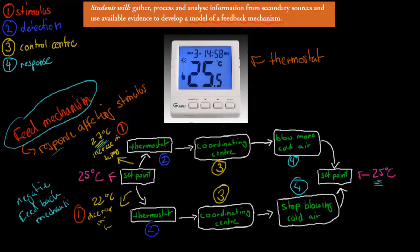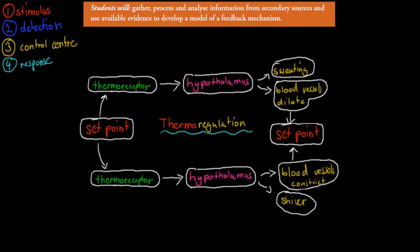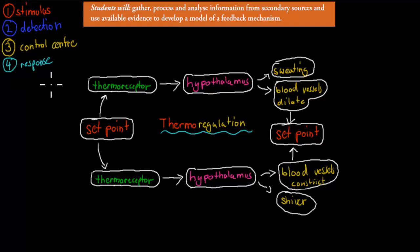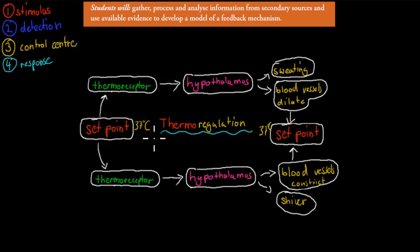So that was the analogy. Now I'm going to go over the actual example which this dot point requires you to do — it requires you to model the actual homeostasis or heat feedback mechanism. In our body we want to have a set point of about 37 degrees Celsius. We call this thermoregulation — thermo means temperature, regulation means controlling.